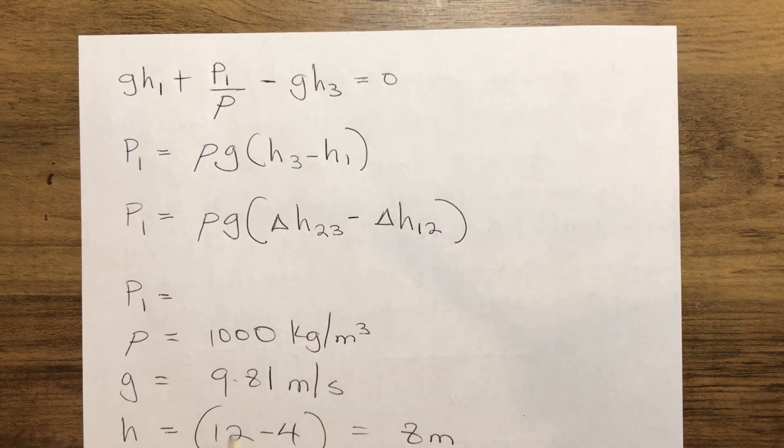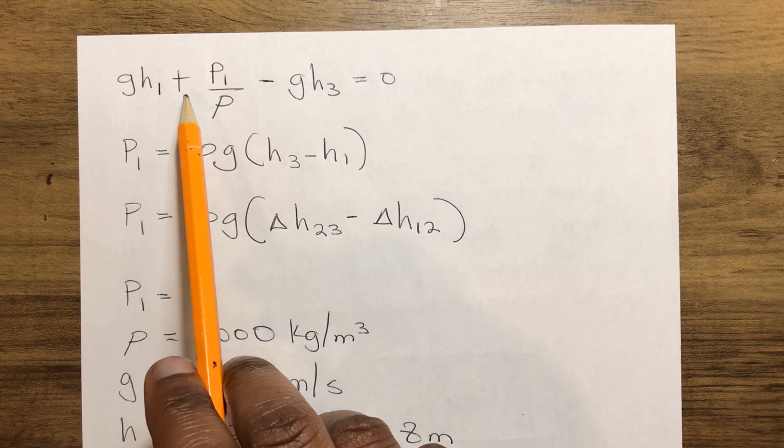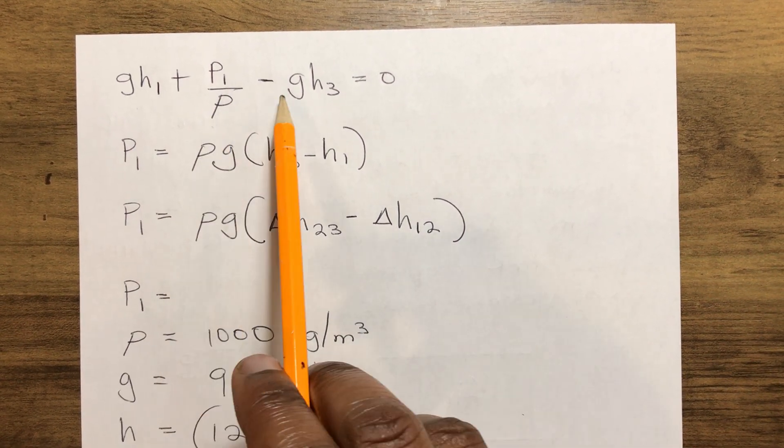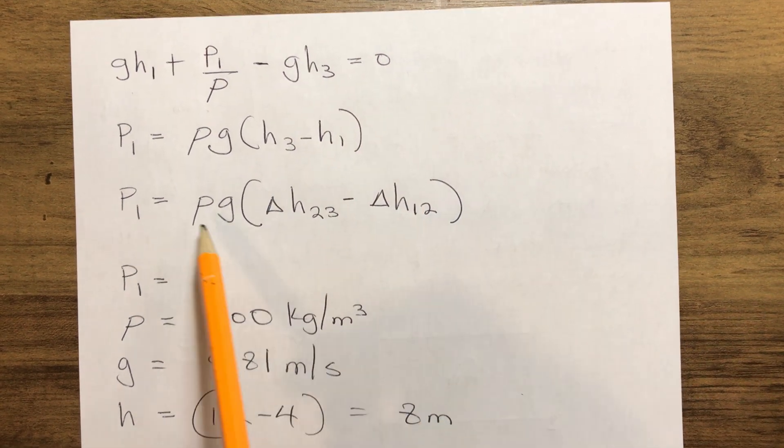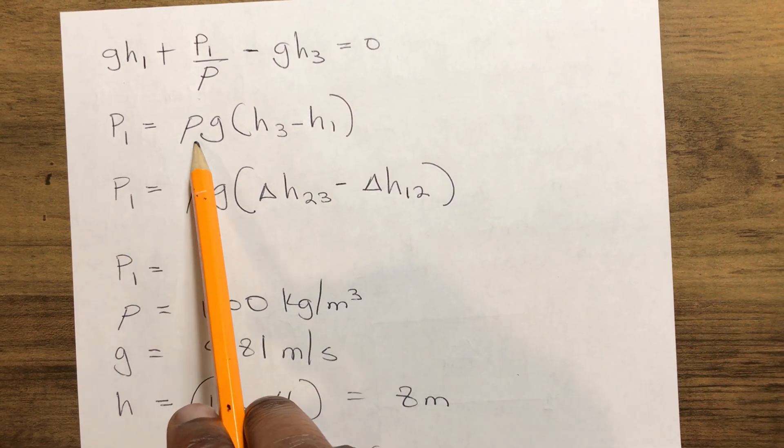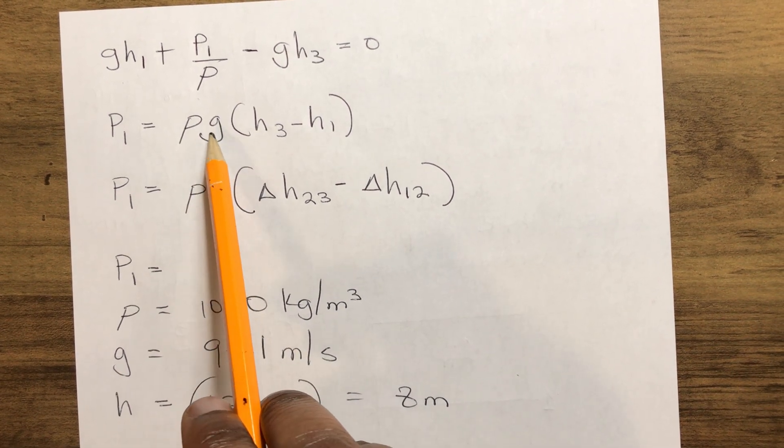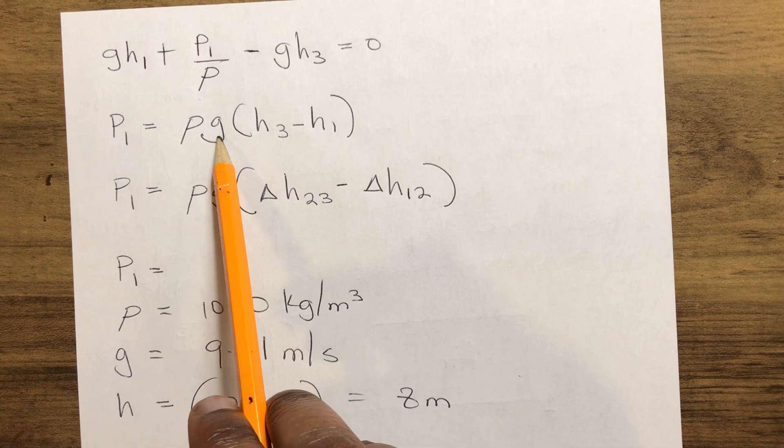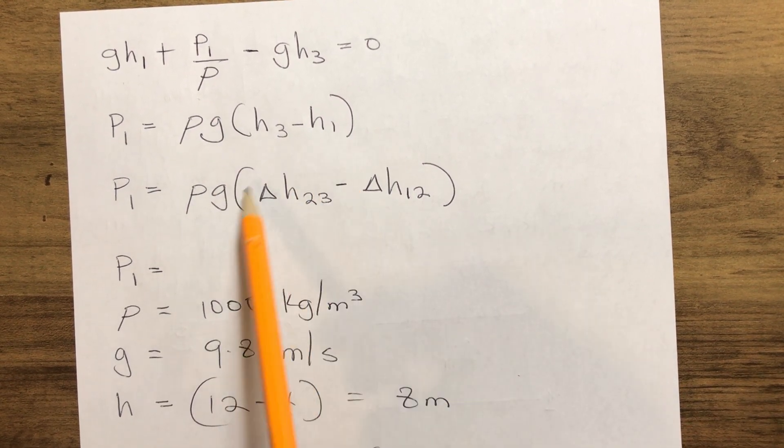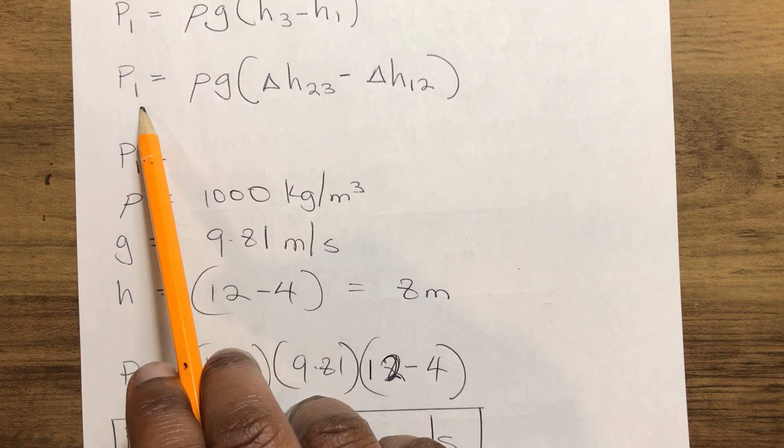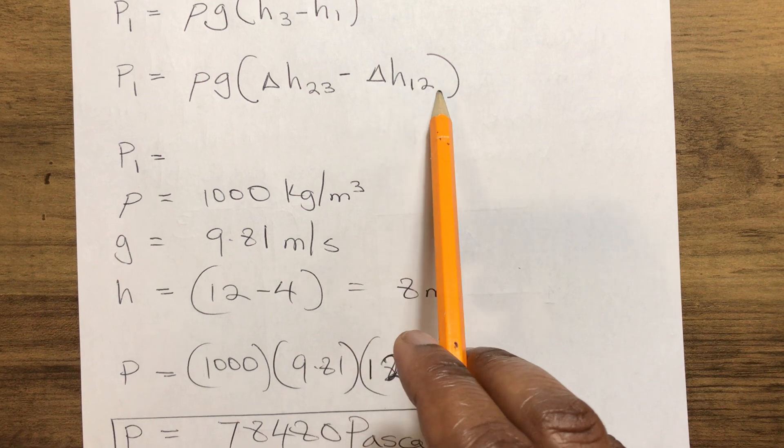From our given equation we have gh1 + P1/ρ - gh3 = 0. So therefore our P1 equals ρ, the density of the water inside the tank, multiplied by the acceleration due to gravity g, multiplied by the height from 3 to 1. So that gives us P1 = ρg(Δh23 - Δh12).